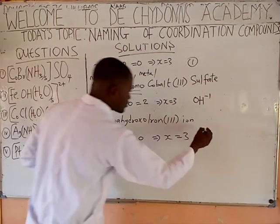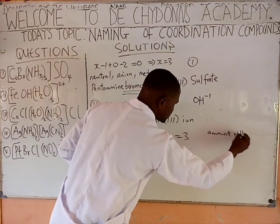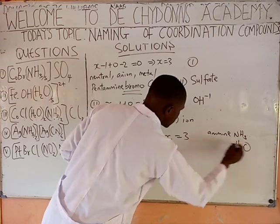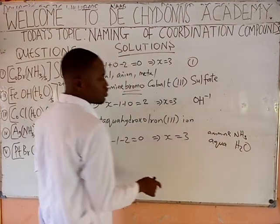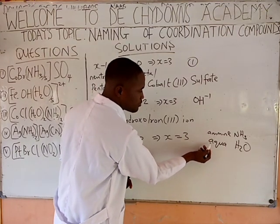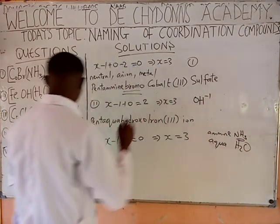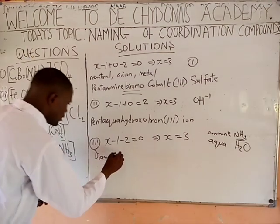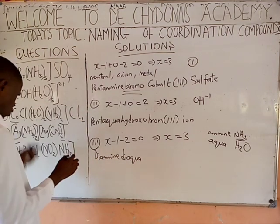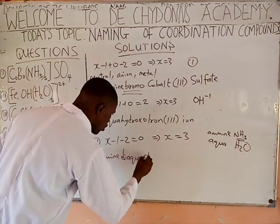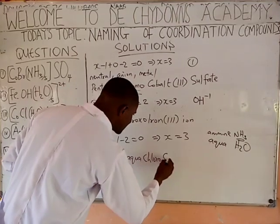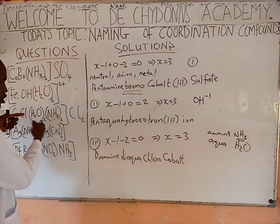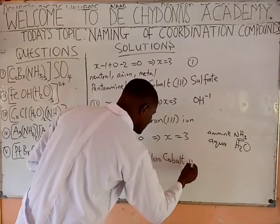This is called amine (NH3) and aqua (water). Between amine and aqua: A-N comes first before A-Q, so amine will come first. You say di-amine, di-aqua. Then name the anion: chloro. Then cobalt — cobalt retains its name because it is in a salt or compound form. The name is diaminediaquachlorocobalt(III).